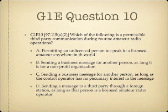Question 10. Which of the following is a permissible third party communication during routine amateur radio operations? A, permitting an unlicensed person to speak to a licensed amateur anywhere in the world; B, sending a business message for another person as long as it is for a non-profit organization; C, sending a business message for another person as long as the control operator has no pecuniary interest in the message; or D, sending a message to a third party through a foreign station as long as that person is a licensed amateur radio operator?